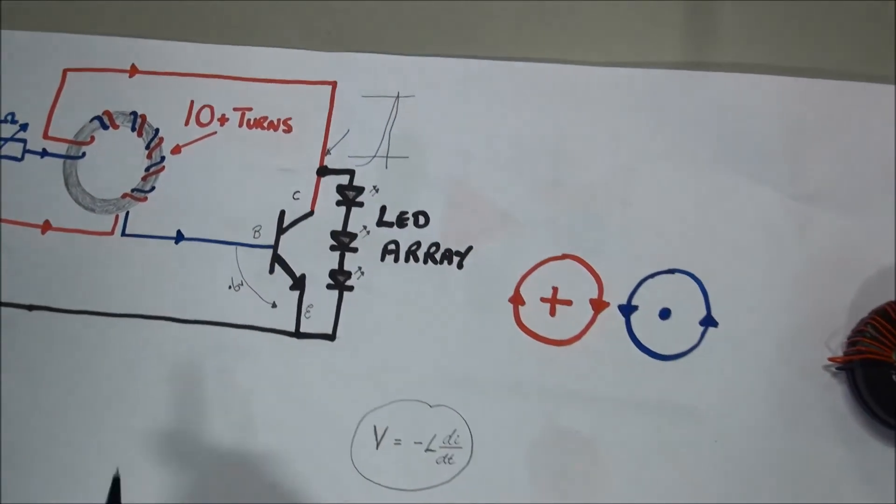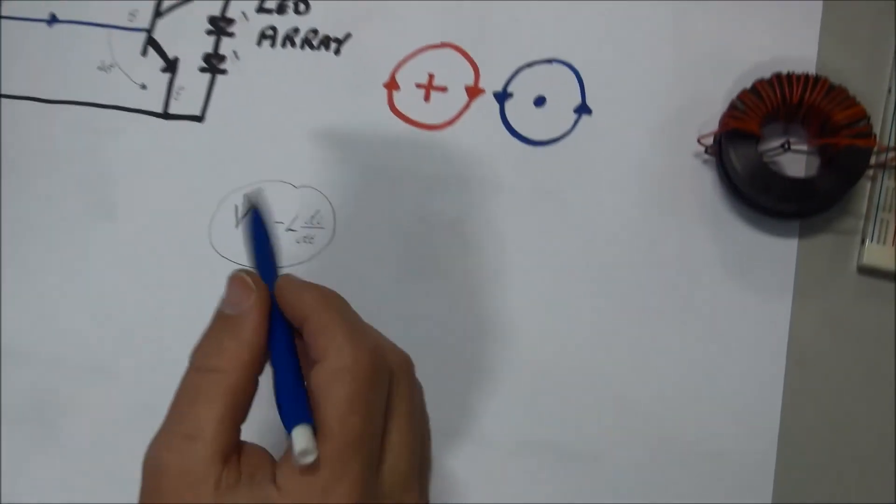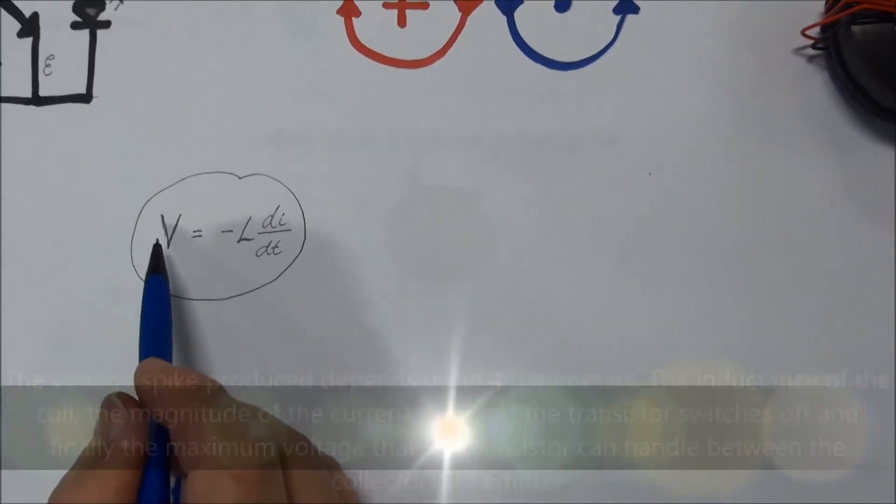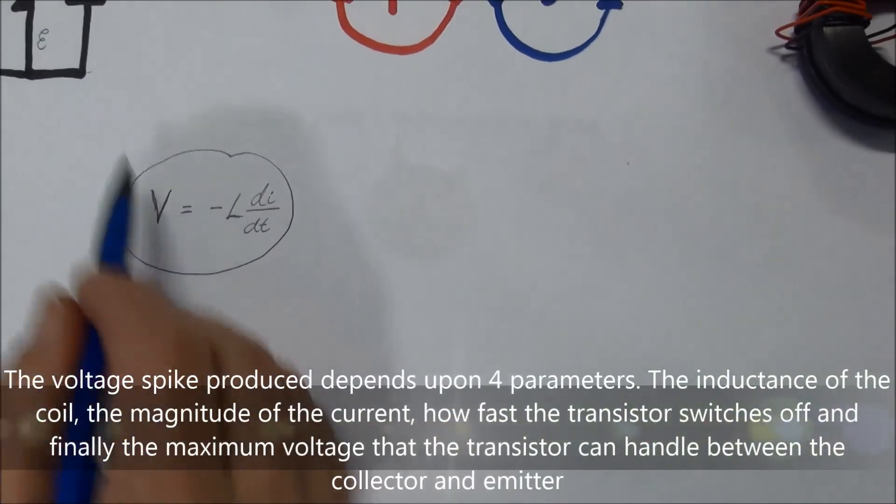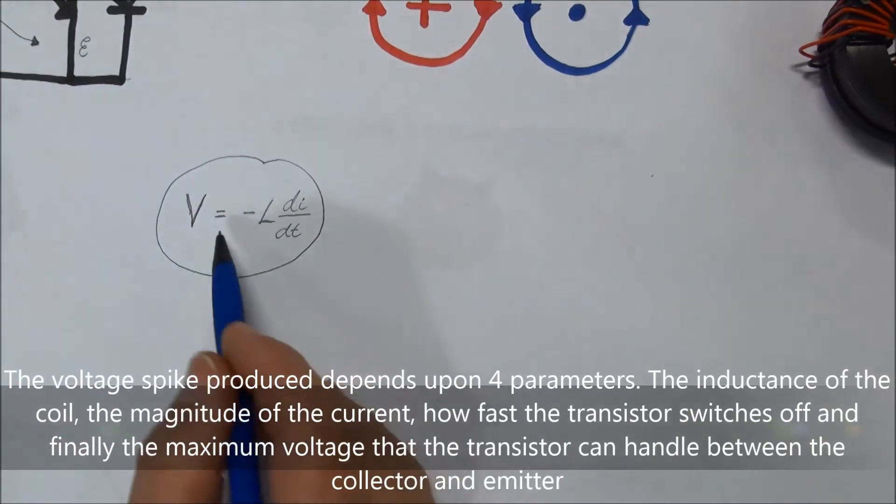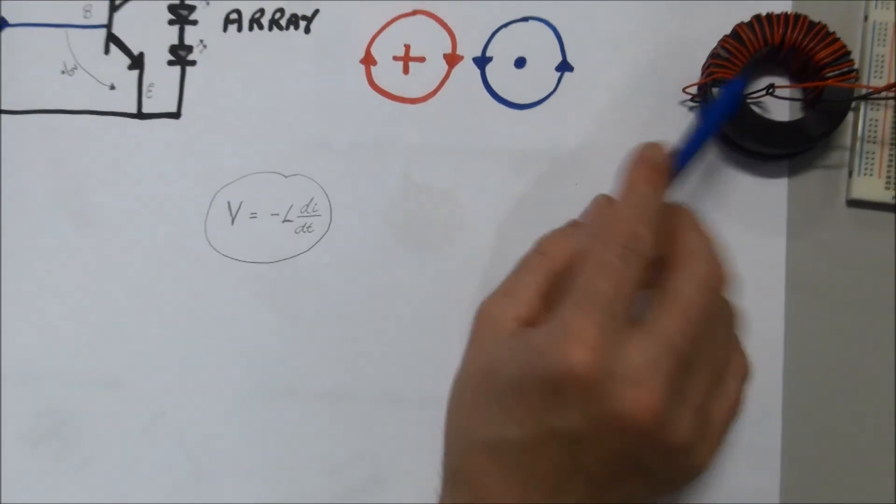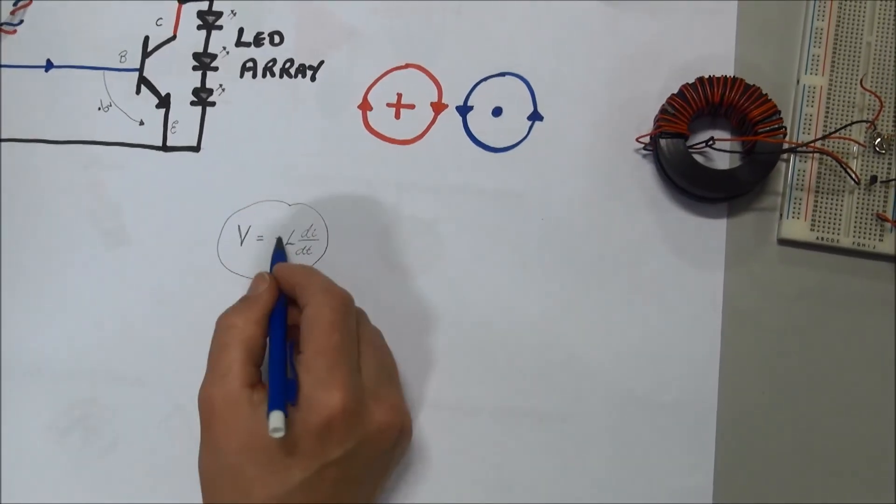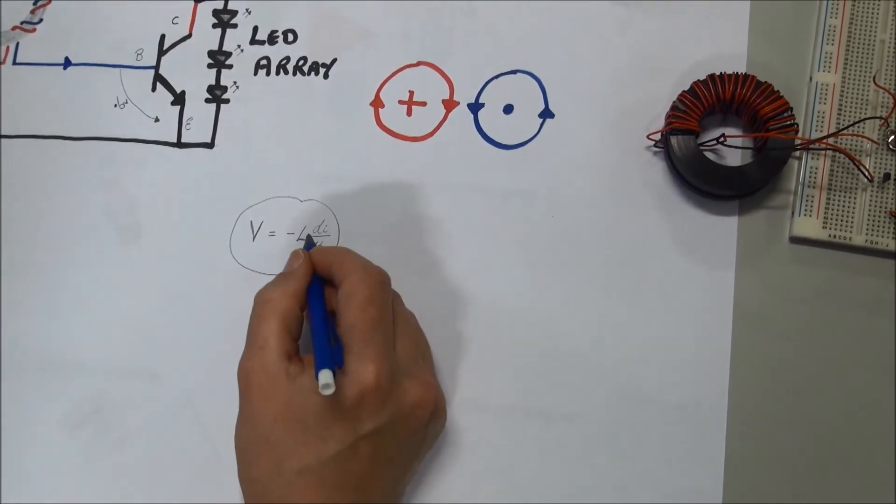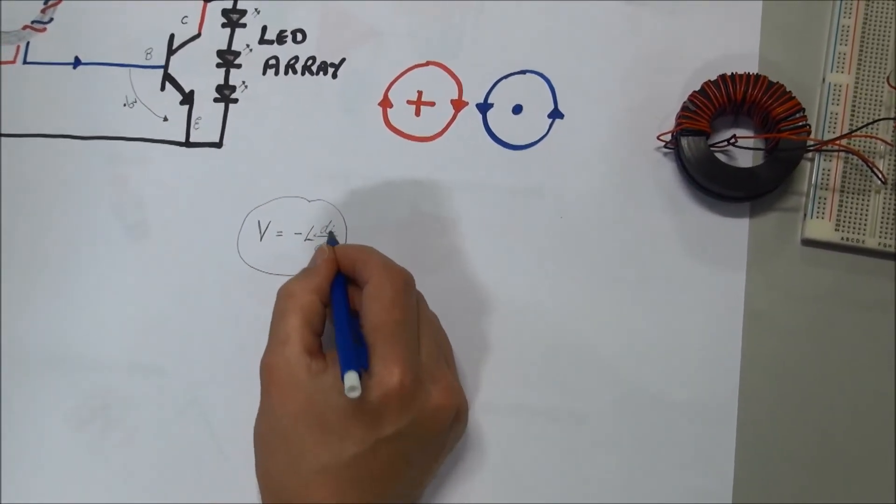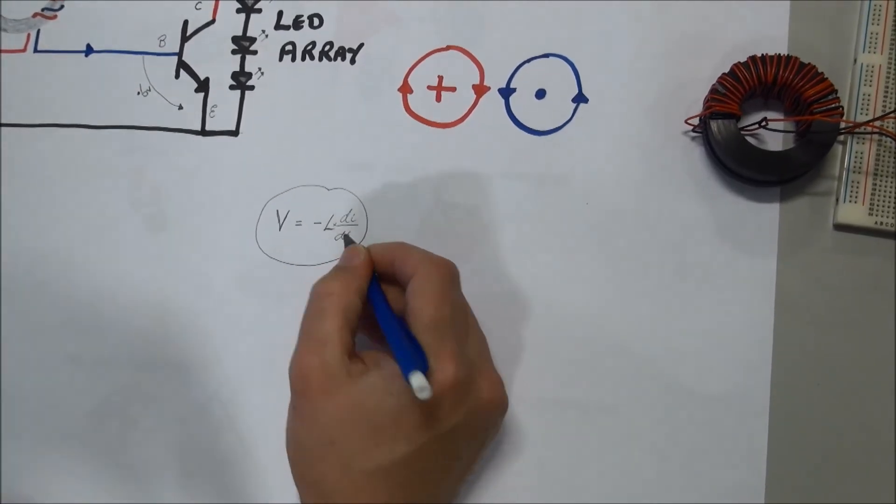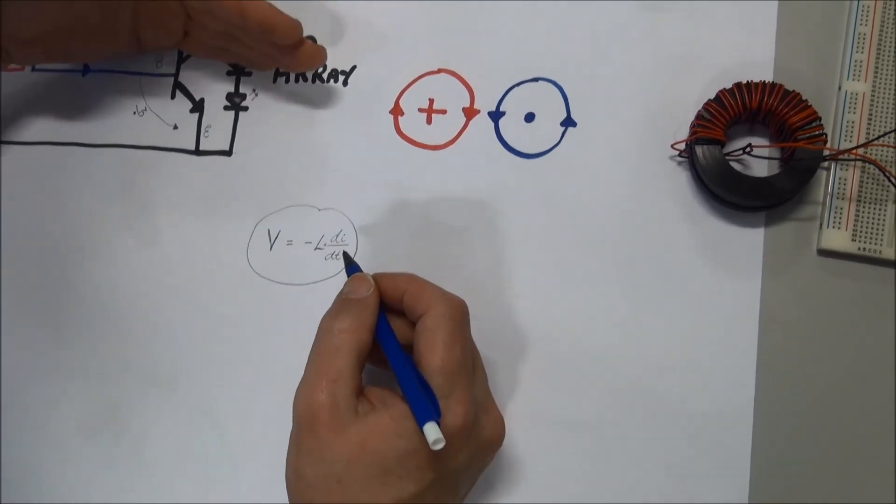Just a little bit of technical information here: the induced voltage, this voltage spike here, is equal to the inductance of the coil. That's the coil here, that's the L part, minus L times the change in current divided by the change in resistance. So because this transistor switches off so rapidly...